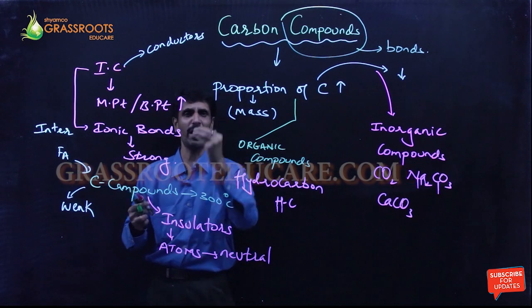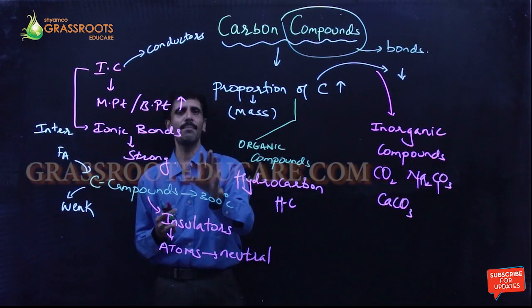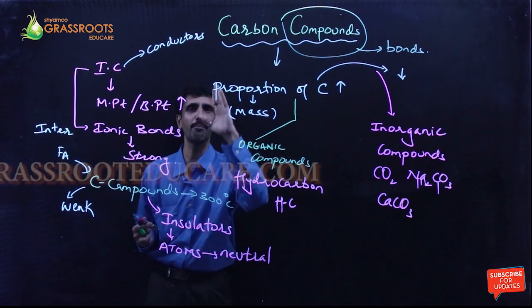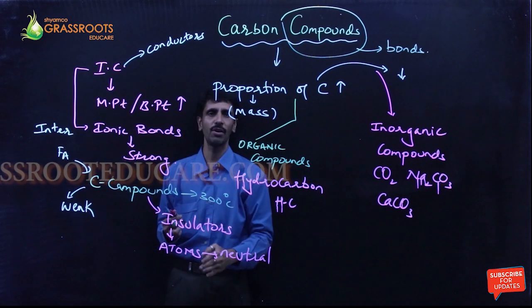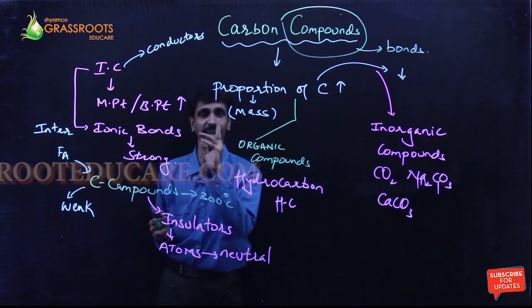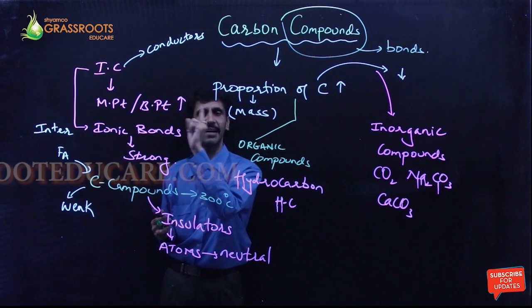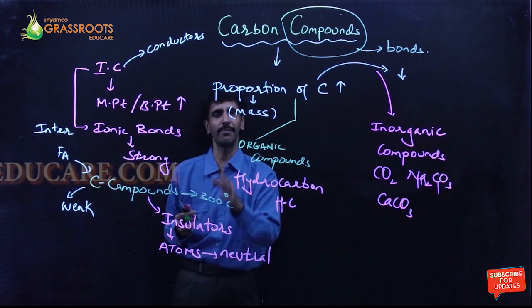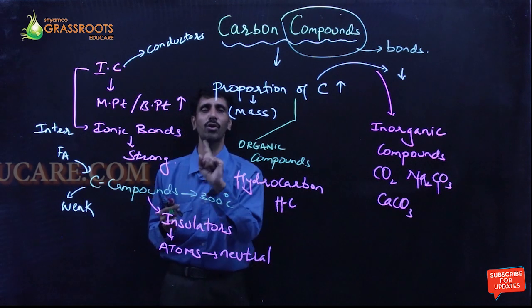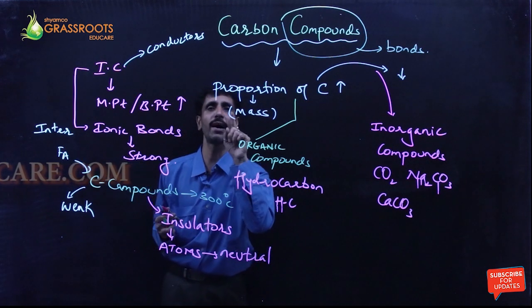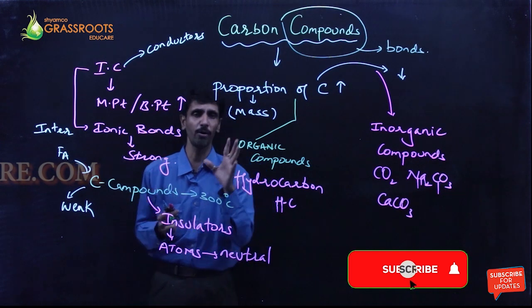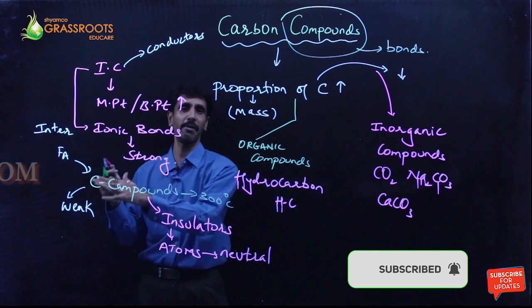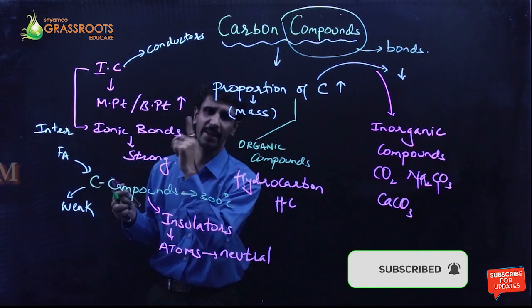So these are the basic two evidences which prove that in carbon compounds the bonding is weak. The first evidence is that their melting point and boiling point is less as compared to ionic compounds. The second thing is the ionic compounds are conductors of electricity and heat, but these are insulators. This once again proves that when we break the bonds of carbon compounds they are not going to give us ions, they are going to give us atoms. So I hope you have understood now the introduction about what exactly carbon compounds are and how they are different from ionic compounds.